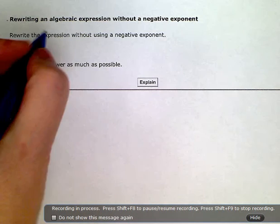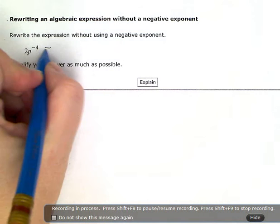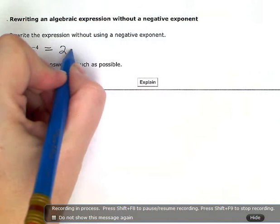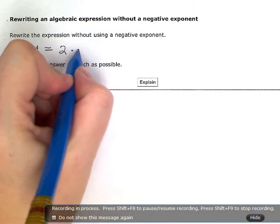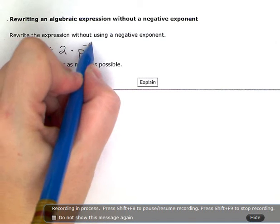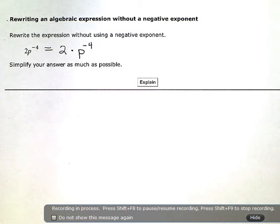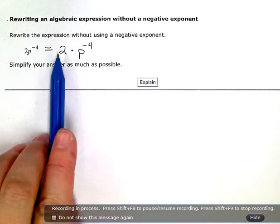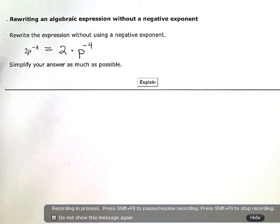So really, I have two things here. I have a 2, and I'm multiplying it by p to the negative 4. So I'm just going to separate those two with the multiplication symbol there so that we can deal with these two individually. And then we'll put it back together.